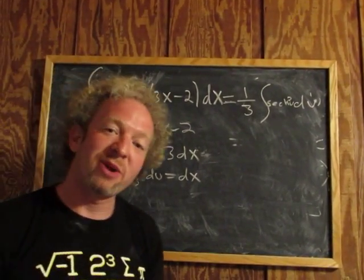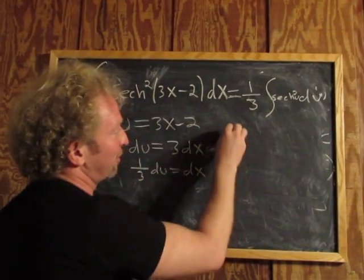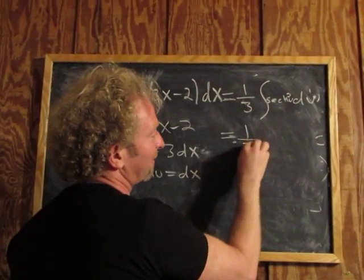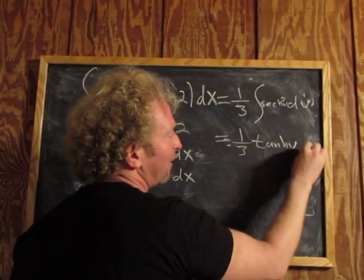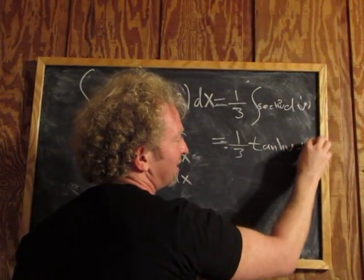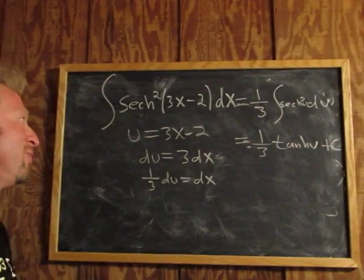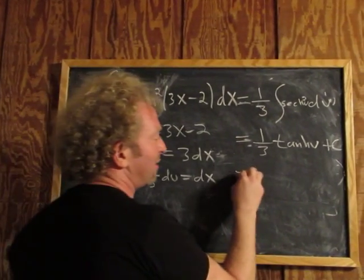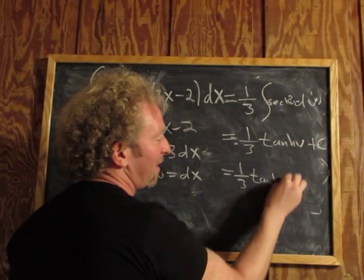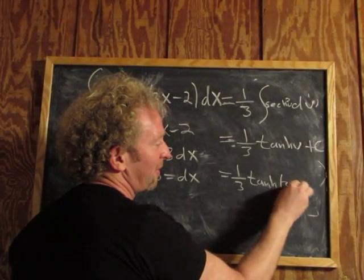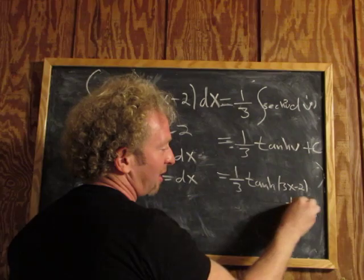The hyperbolic secant squared integrates to the hyperbolic tangent. So this equals one-third hyperbolic tangent of u plus c. Then you simply replace u with 3x minus 2. This equals one-third hyperbolic tangent of 3x minus 2 plus c.